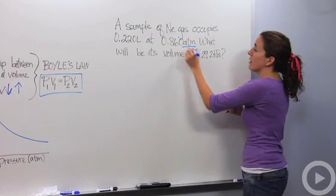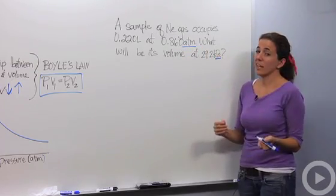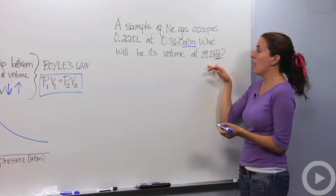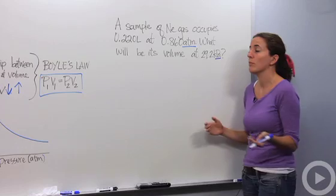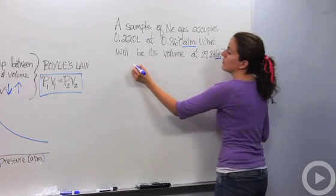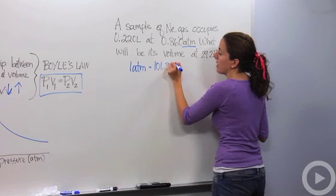Pressure is in atmospheres in the first scenario, and the second one is in kilopascals. I'm going to put them in the same unit. I'm going to choose atmospheres. It doesn't matter which you choose, it will give you the same answer. I know that one atmosphere equals 101.3 kilopascals.